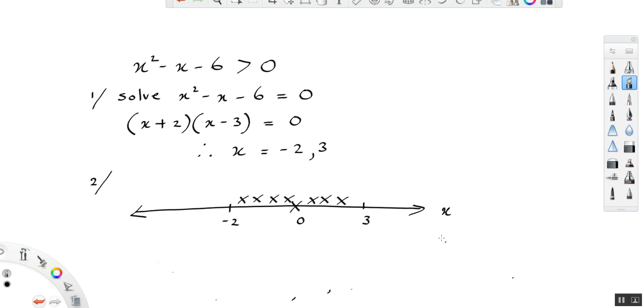If I substitute in 10, I'm going to get 100 minus 10 minus 6. So at x equals 10, we're going to get 100 minus 10 minus 6. That's 84, which is greater than 0. So that tells us that everything above 3, we're getting values that are greater than 0.